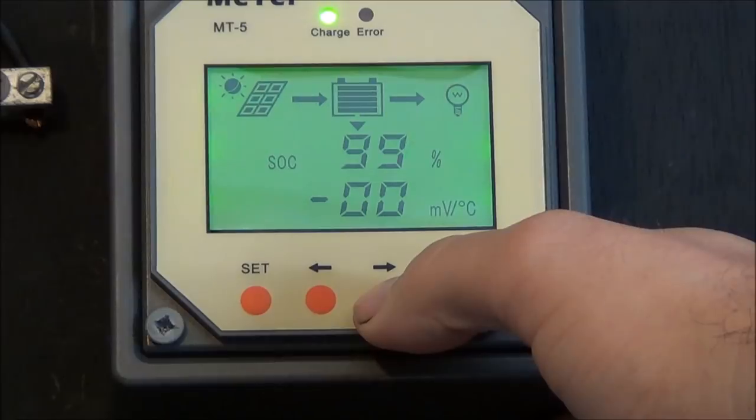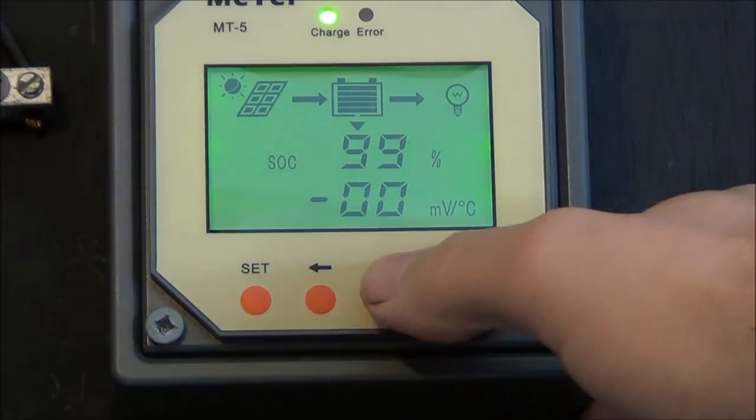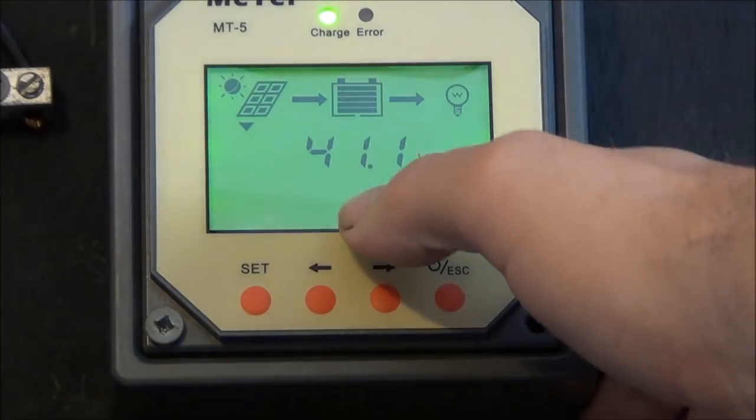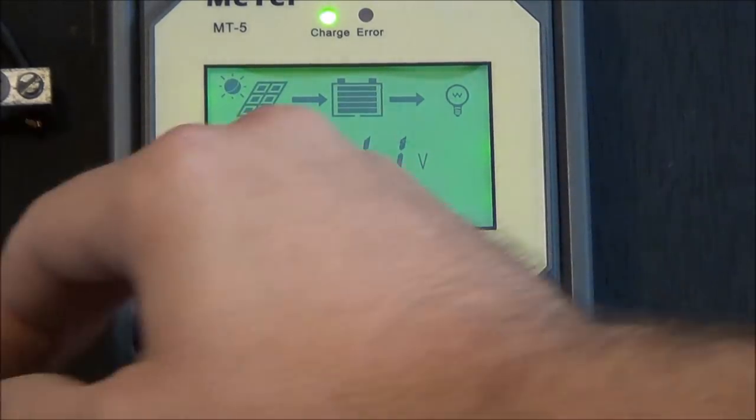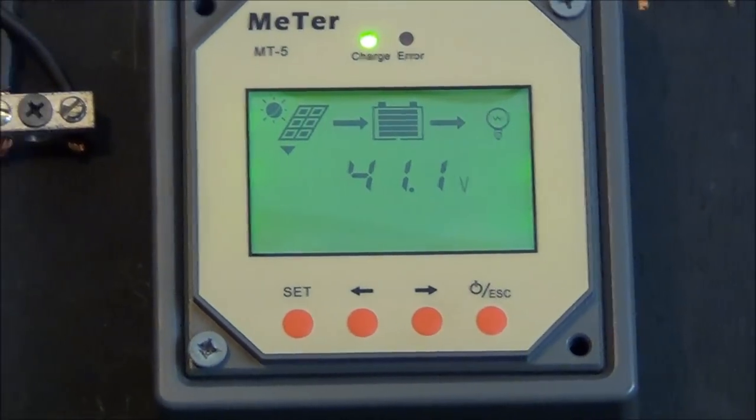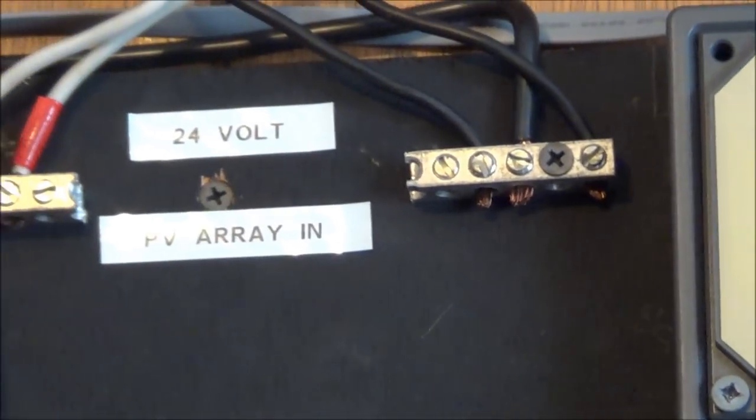150 amp hour batteries. I'm only charging 4. They're in float mode. Shows your wattage coming in. 24 volts coming down from the PV array here.